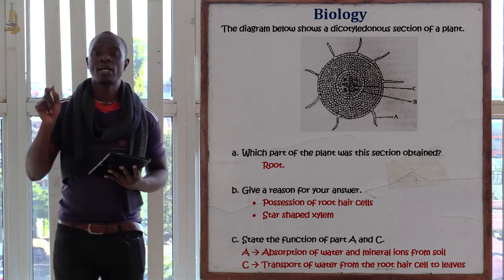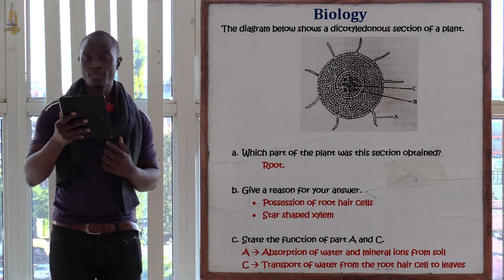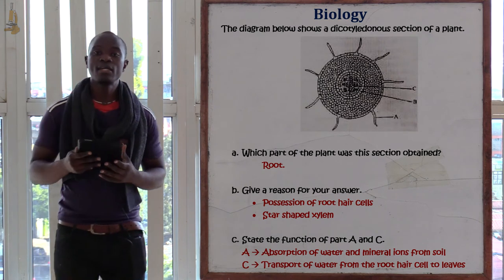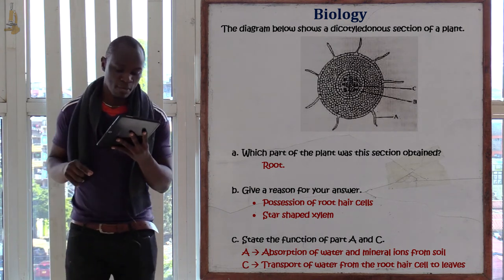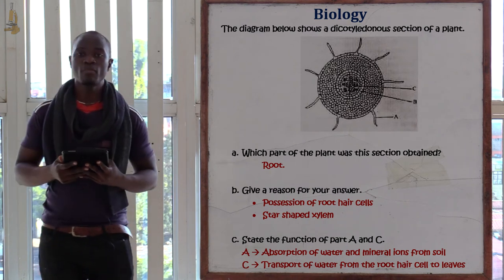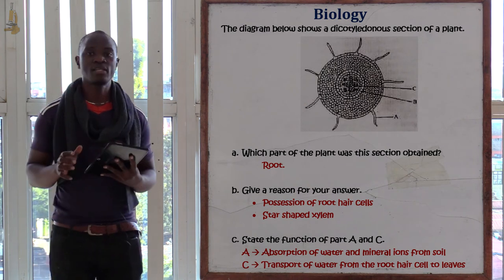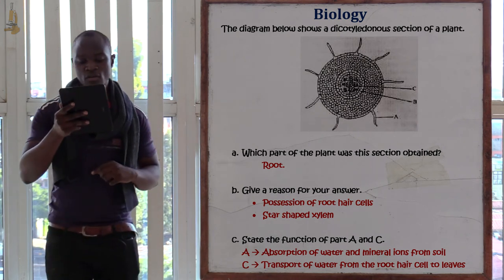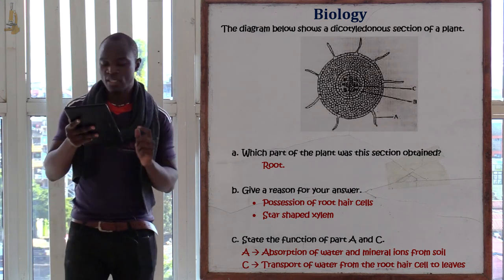The reason it is dicotyledonous is the star-shaped xylem with phloem surrounding it. The function of the root hair cell (part A) is absorption of water and mineral salts from the soil into the plant. The function of the xylem (part C) is transportation of water and mineral salts from the roots to the leaves of the plant.